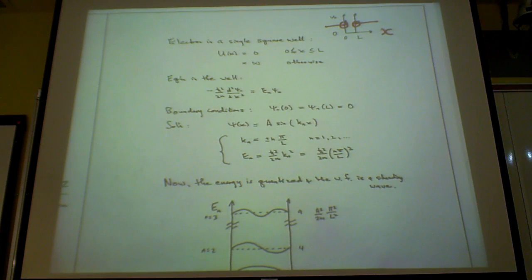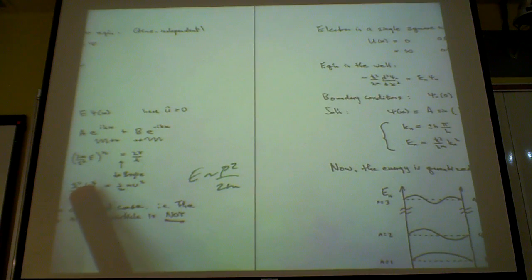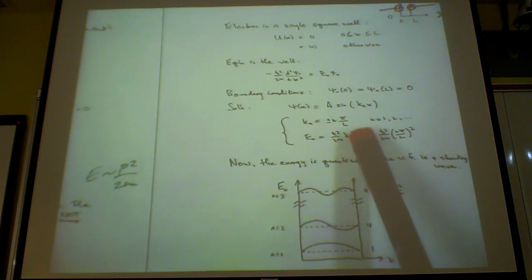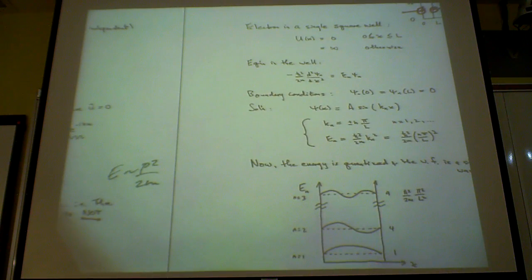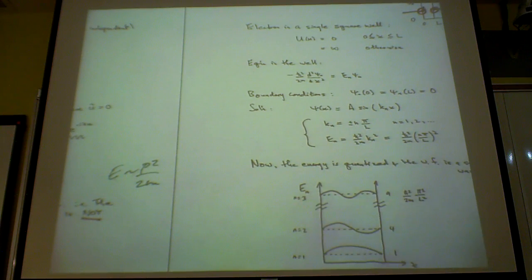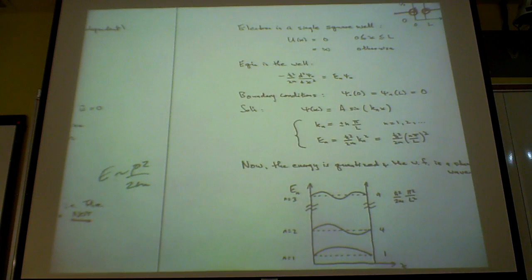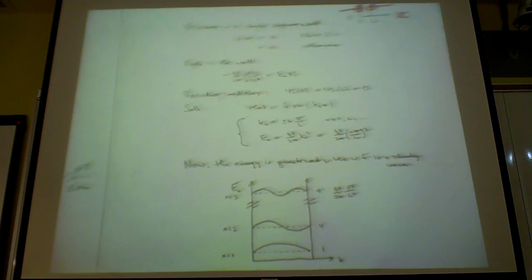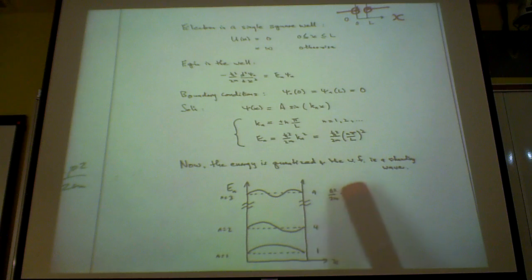Your energy has the same form: h-bar squared divided by 2m, times k squared. But now instead of just k squared, you have k_n squared, where n identifies the quantum number. The major consequence of the boundary condition is that you create quantization — once you put the electron in a box, the energy is quantized, and the wave function is a standing wave.